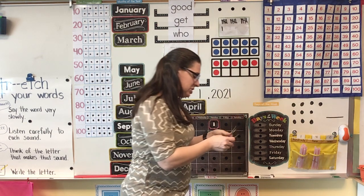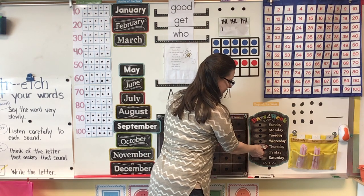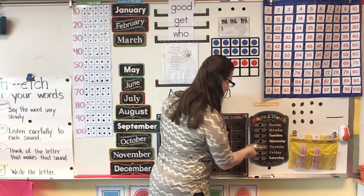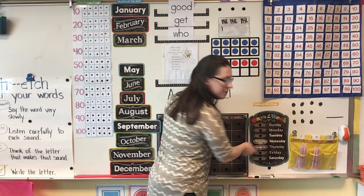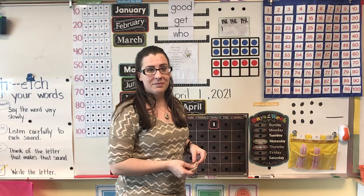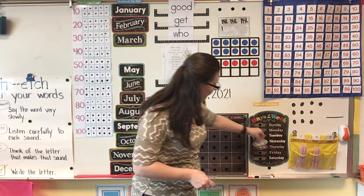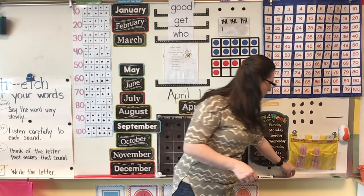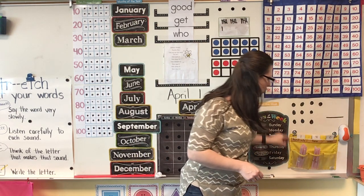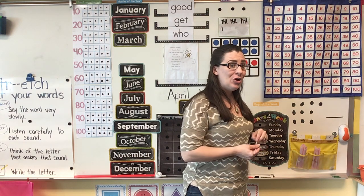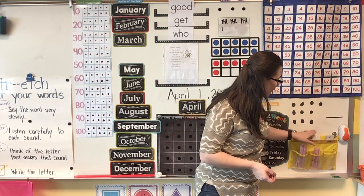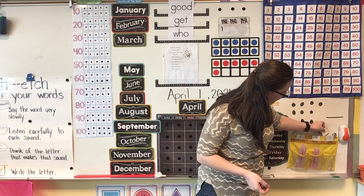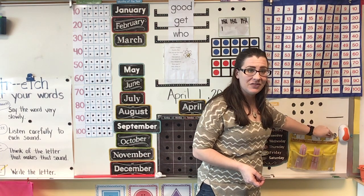Now, I just told you today is Thursday and I also said that yesterday was Wednesday, but can you tell me what tomorrow will be? That's right. Tomorrow will be Friday, the last day of school for the week. If we add one more straw to 140, we get 141 days of kindergarten.